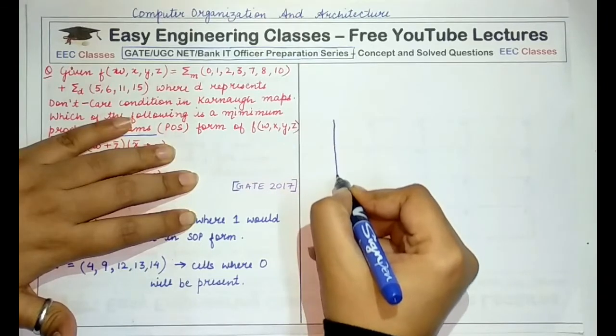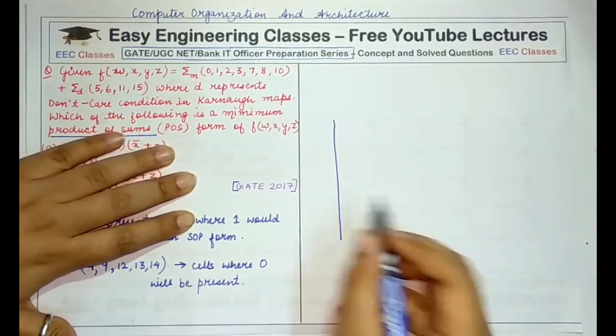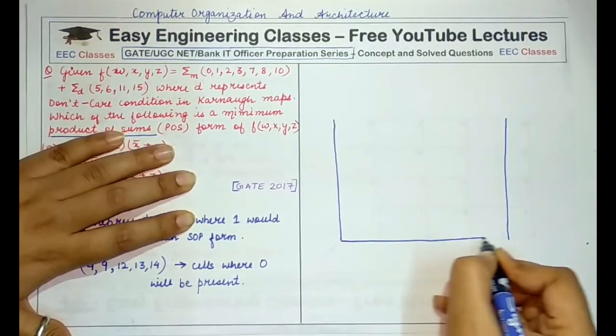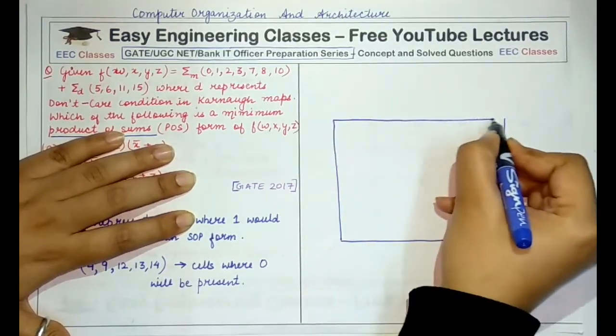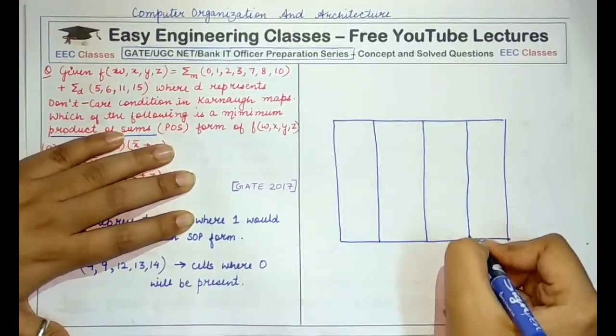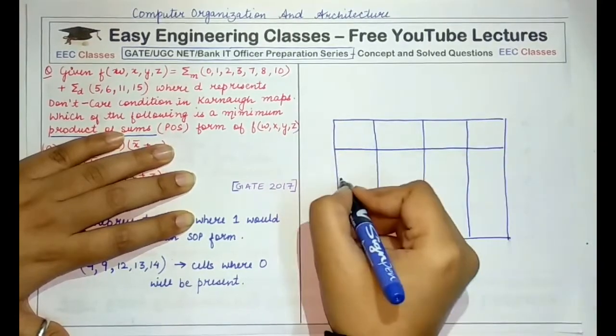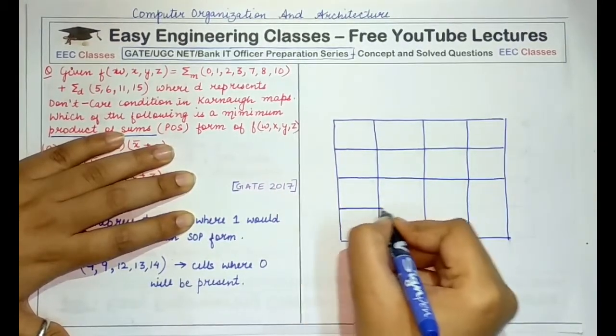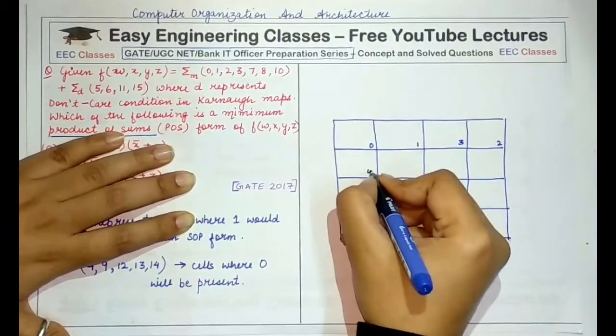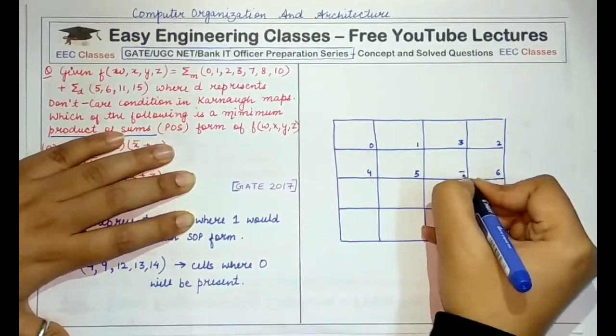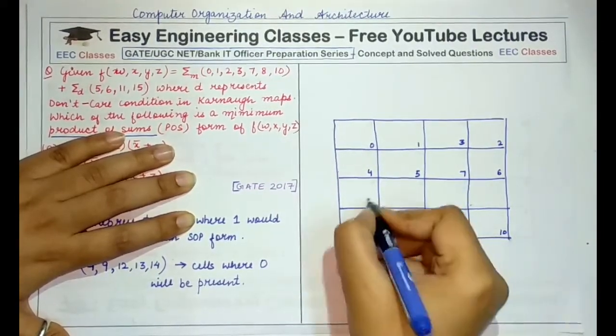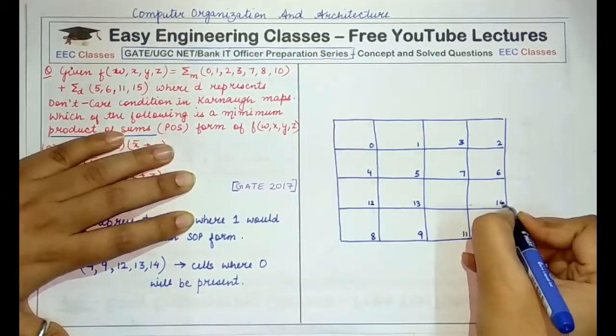So drawing the Karnaugh map, since there are 4 variables, it would be a 4x4 Karnaugh map with cells numbered from 0 to 15. Please remember the order in which the values are written in a Karnaugh map. This is 0, 1, 2, 3, then 4, 5, 6, 7, then 8, 9, 10, 11, then 12, 13, 14, and 15.